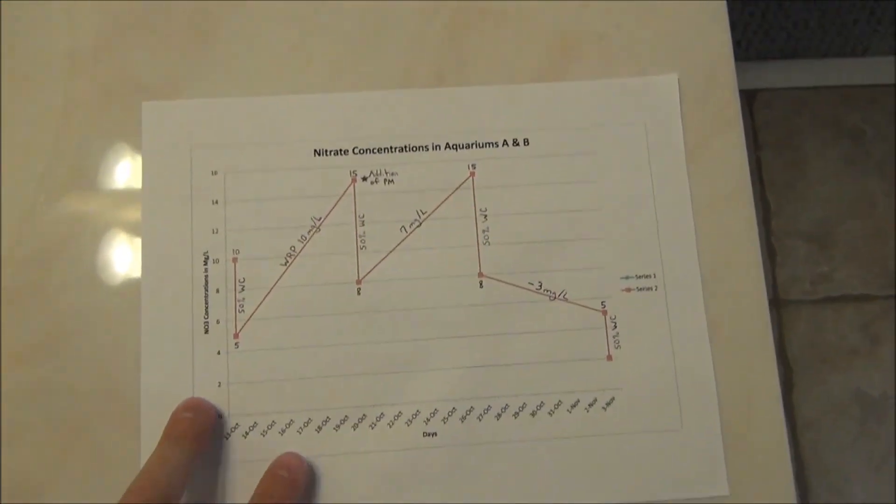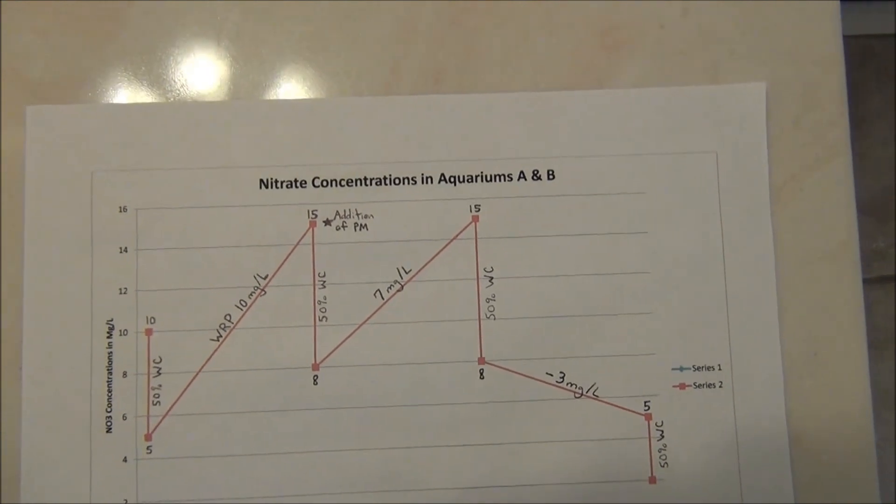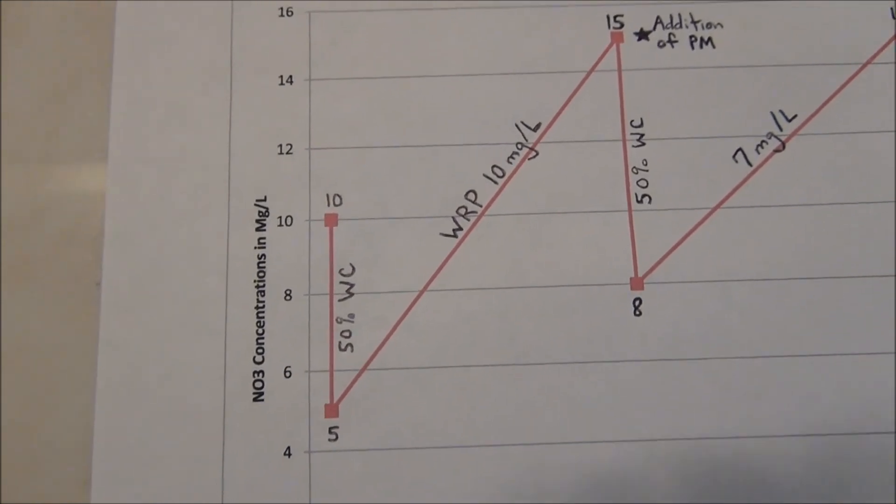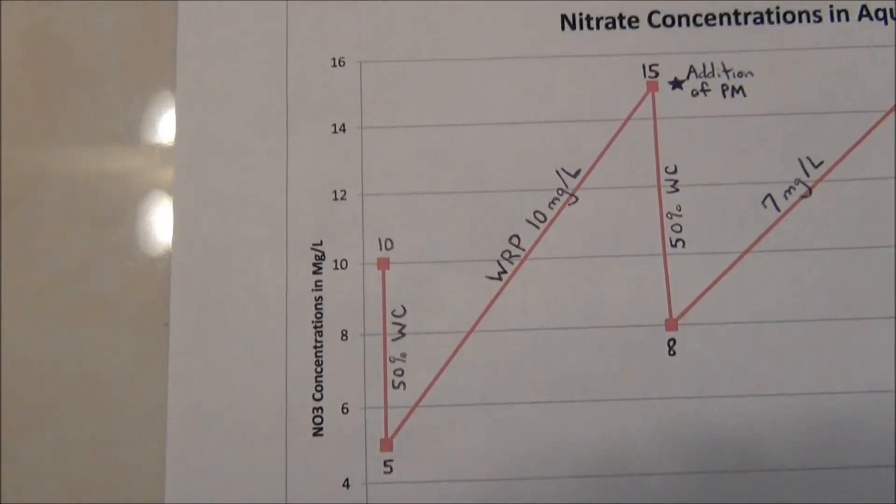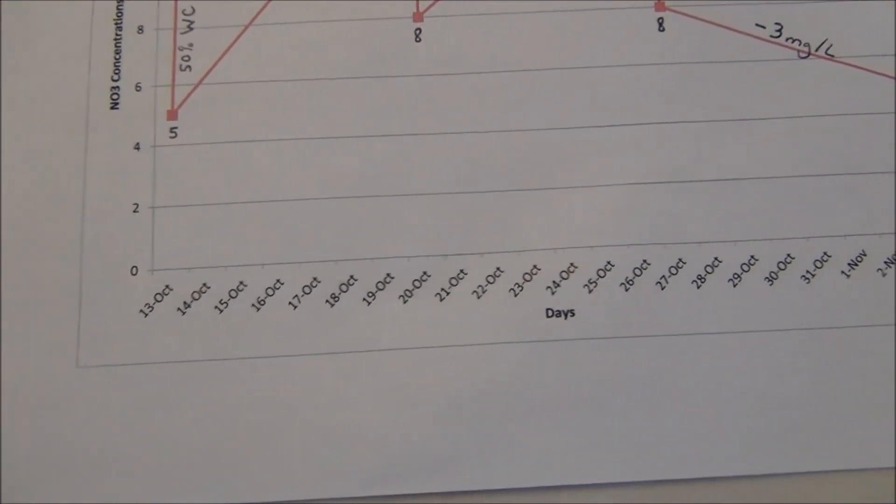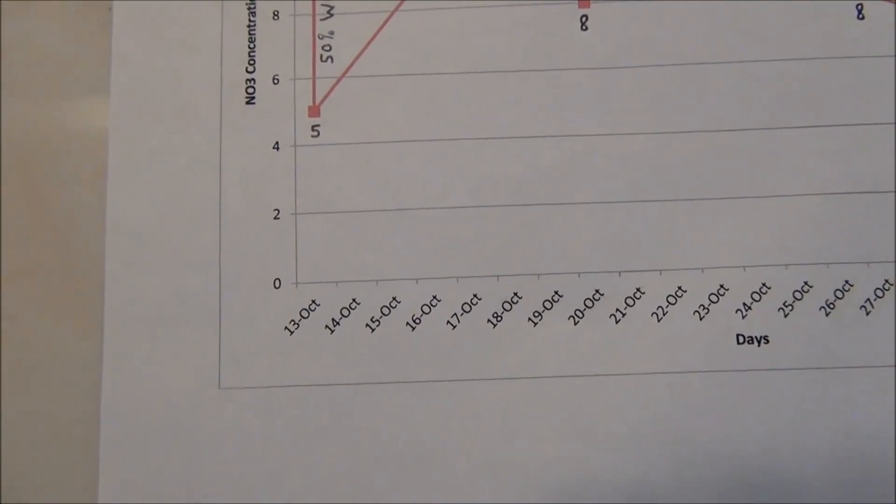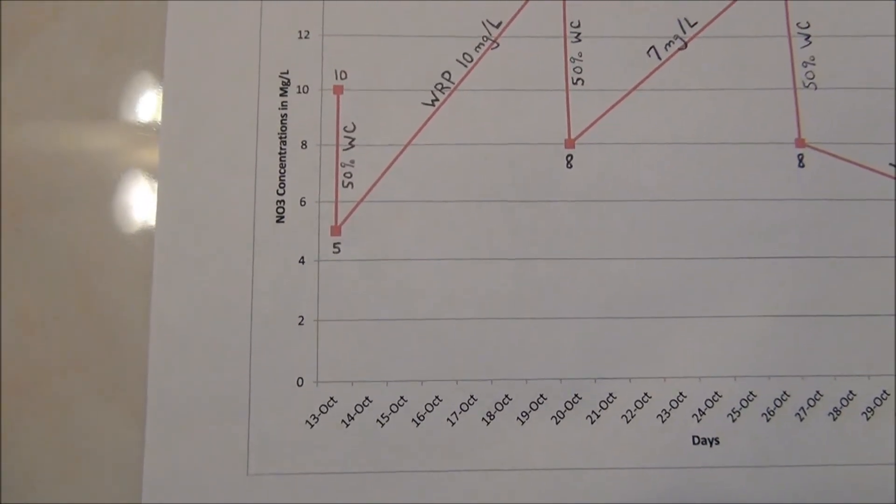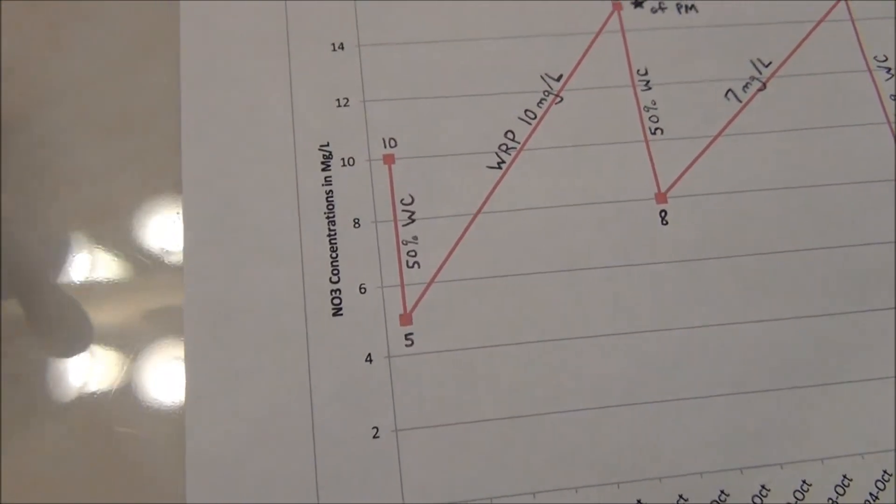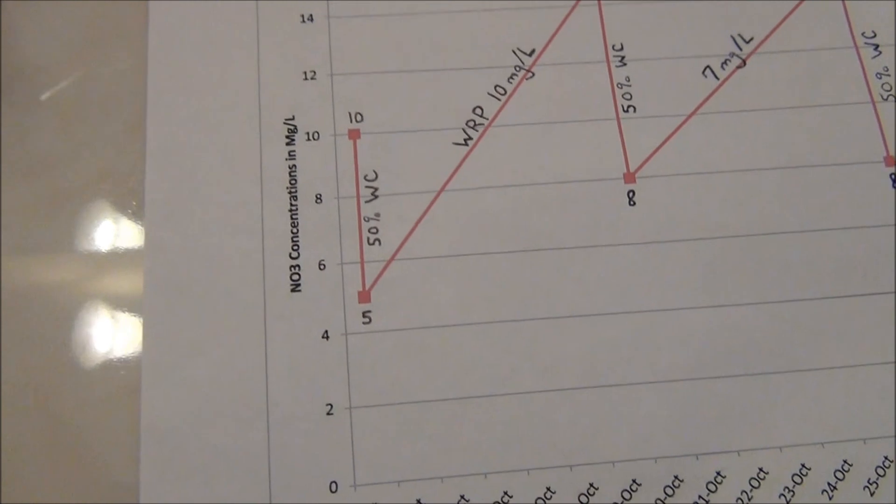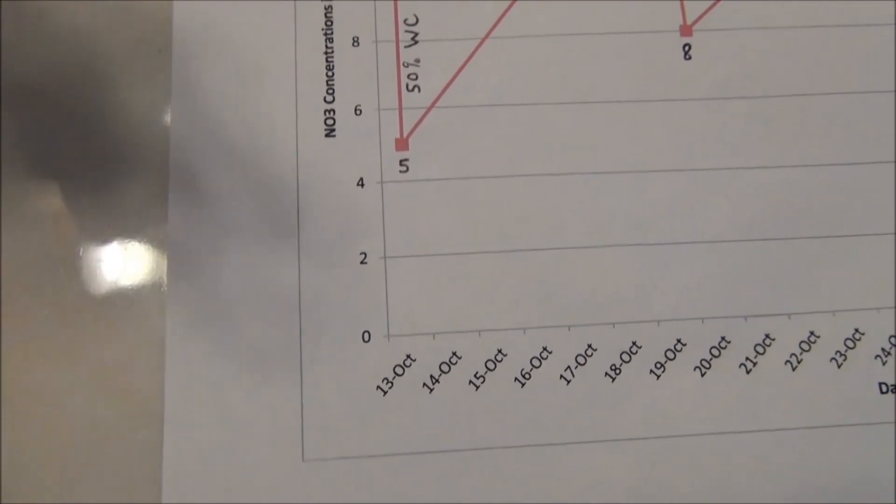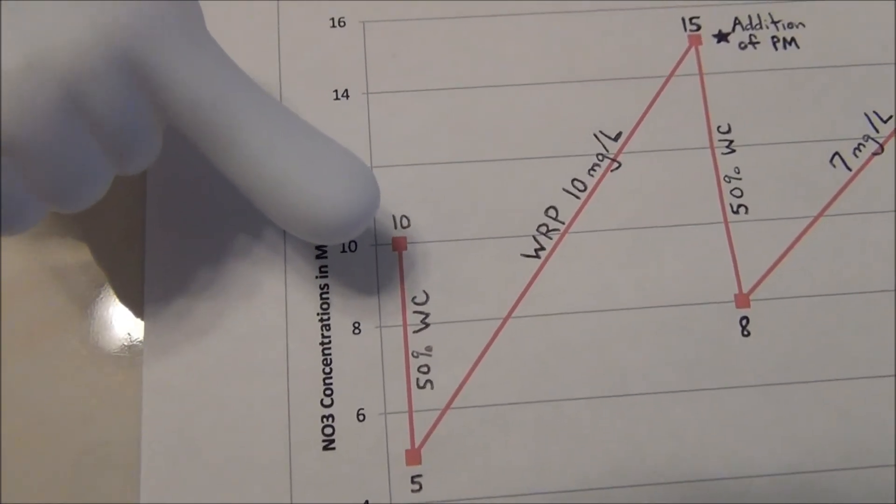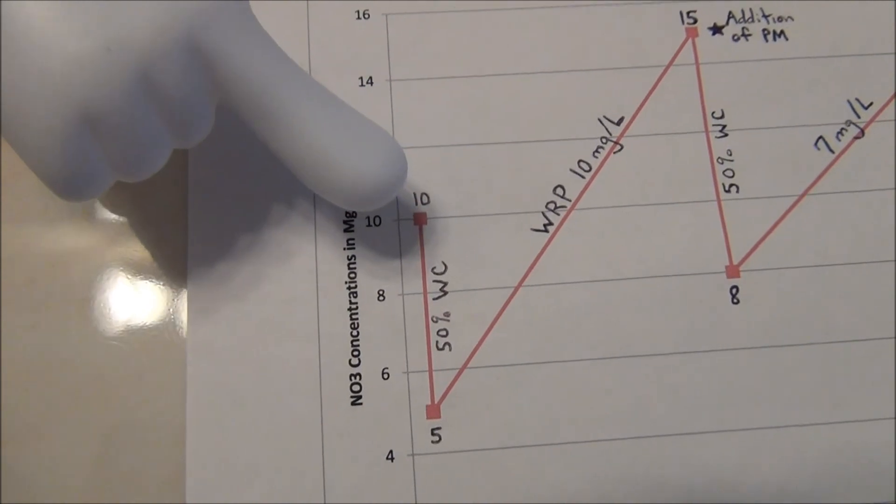This is the nitrate concentrations in aquariums A and B. The vertical column is the nitrate concentrations in milligrams per liter from 0 to 16, and the horizontal row is the days. We started this experiment on September 17th setting up the aquarium, but the actual experiment started with the tests on October 13th.